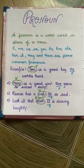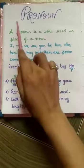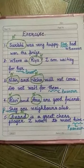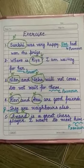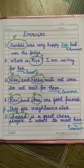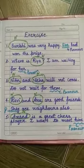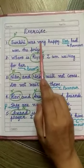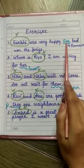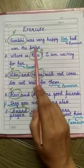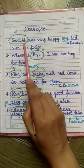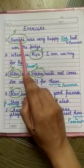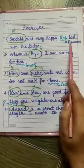Now, let's do one exercise based on pronoun. In this exercise, we need to find the noun and the pronoun which is used in place of that noun. First: Surabhi was very happy; she had won the prize. In this sentence, Surabhi is a noun and it is replaced by the pronoun she.